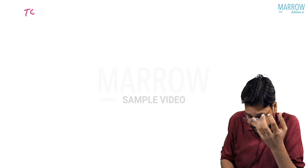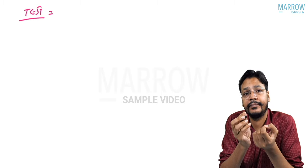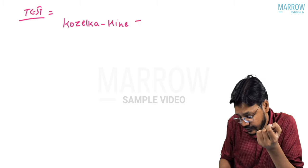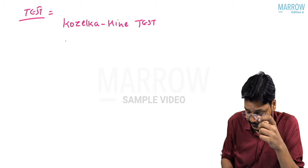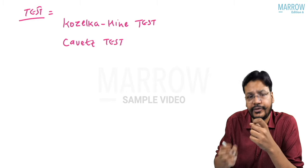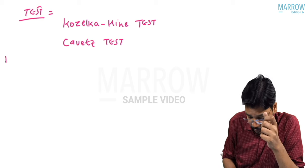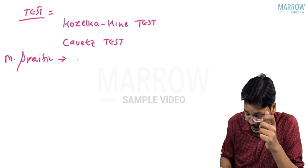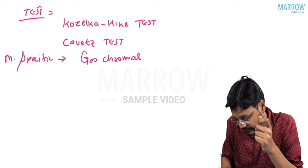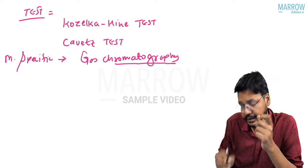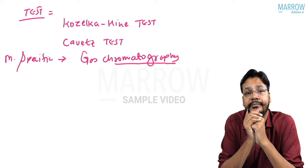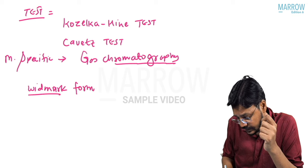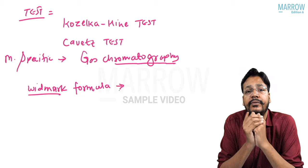For ethanol, we do some tests. The first is the Kozelka and Heine test. The second is the Kevitt test. But the most specific test is gas chromatography — it is the most specific test for ethanol intoxication. For ethanol, we also use a formula known as the Widmark formula.